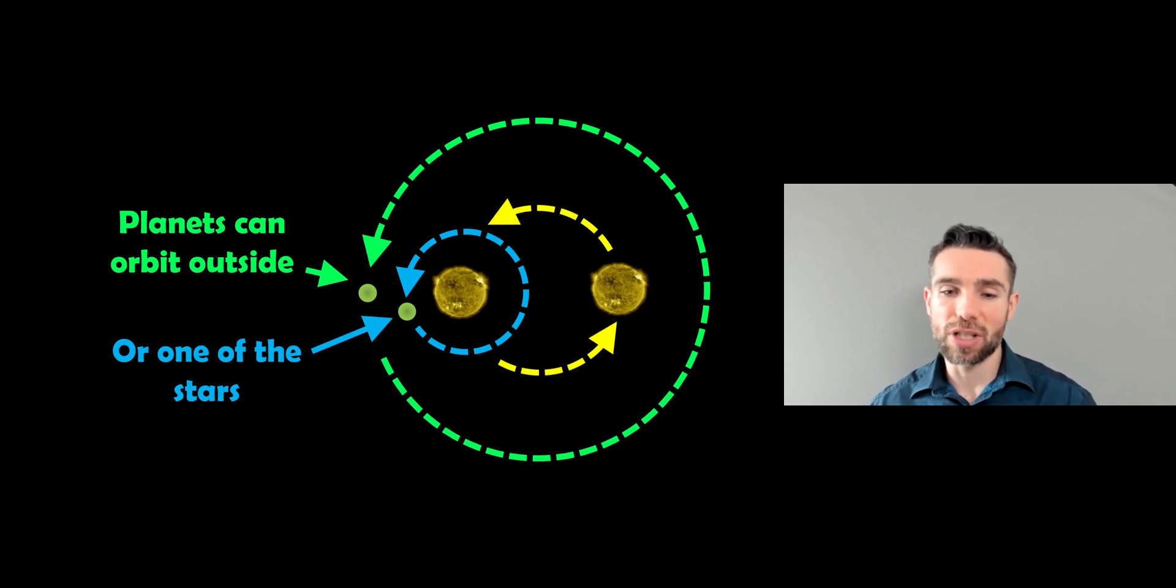It's a bit more chaotic and unstable. But you do have two different sorts of orbits you can have. One goes around the outside of both stars. One goes around just one of the stars. This is quite important, especially when it comes to things like the habitable zone for that planet.